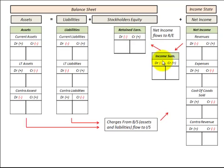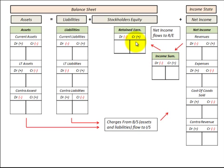What we're looking at in this presentation is the income summary account. It's a temporary account that takes the net income revenues and expenses for the year, putting them into the income summary account. They're summed up and then the net amount flows back into retained earnings in the balance sheet.